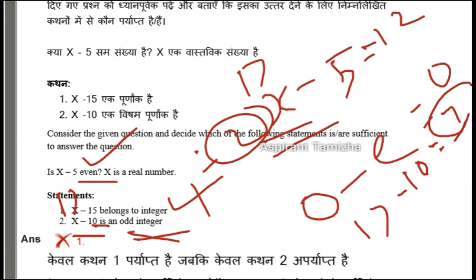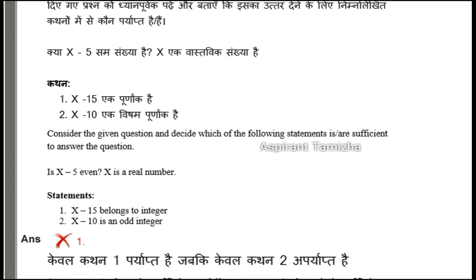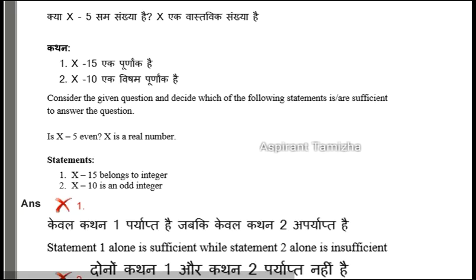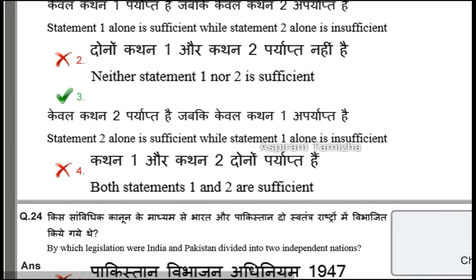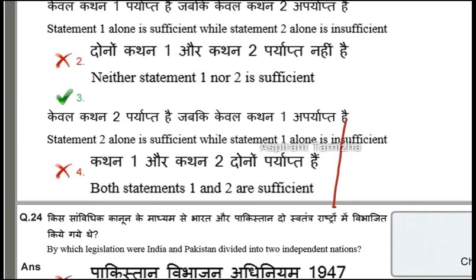If your x is equal to 10, then you are equal to the integer. In other words, if your x is equal to x, it would be equal to r. So when you have the absence of this, the statement is sufficient.